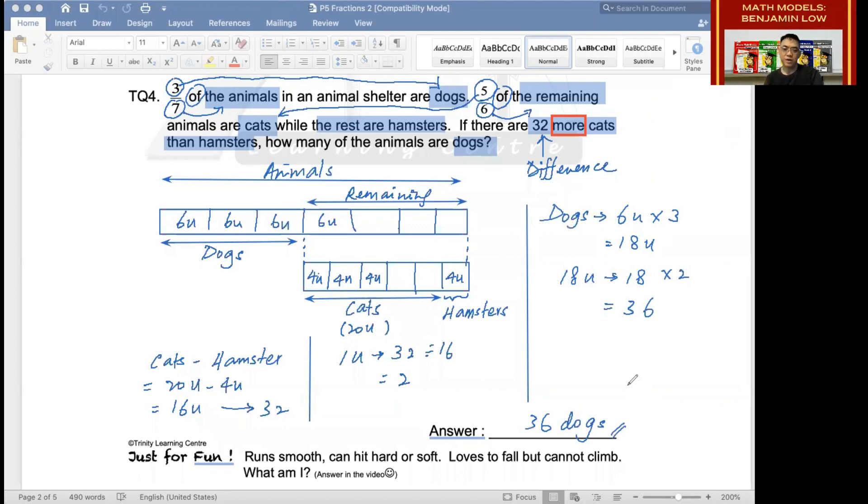Great, you know what to do with this, correct? Always practice on your own without copying directly from the videos in order to improve. Let's solve the riddle below. It says, What runs smooth? Can hit hard or soft? Loves to fall but cannot climb? What am I? The answer is rain.